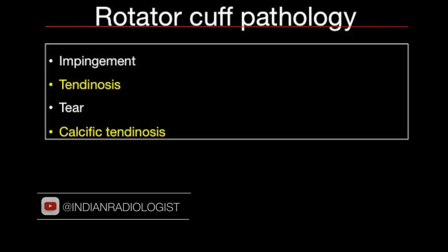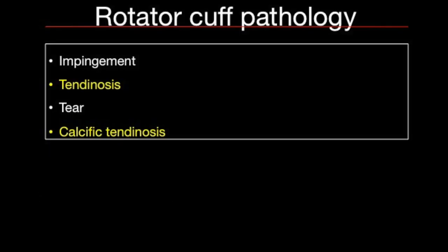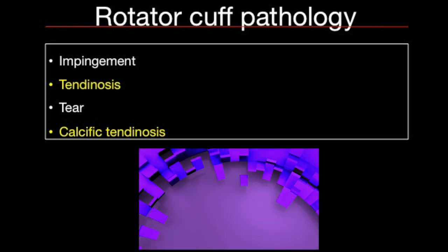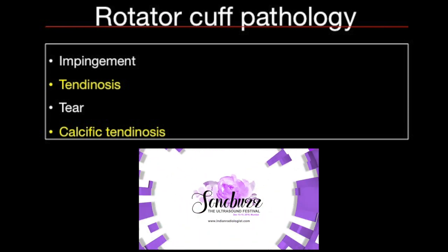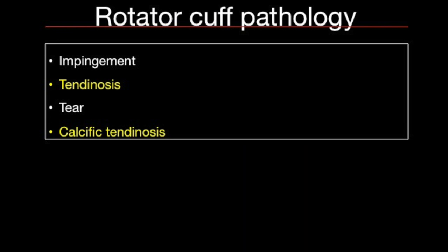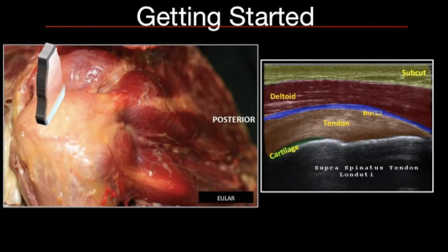Ultrasound evaluation of rotator cuff forms a bulk of our work in day-to-day practice of musculoskeletal ultrasound. During this talk we will be focusing on cuff impingement, tendinosis, cuff tears, and calcific tendinosis. It's important to know that pathologies of the subacromial subdeltoid bursa, the long head of the biceps, and the acromioclavicular joint may often coexist with rotator cuff disorders. For instance, if there's a full thickness tear of the cuff, you might see effusion in the subacromial subdeltoid bursa as well as the biceps tendon sheath.